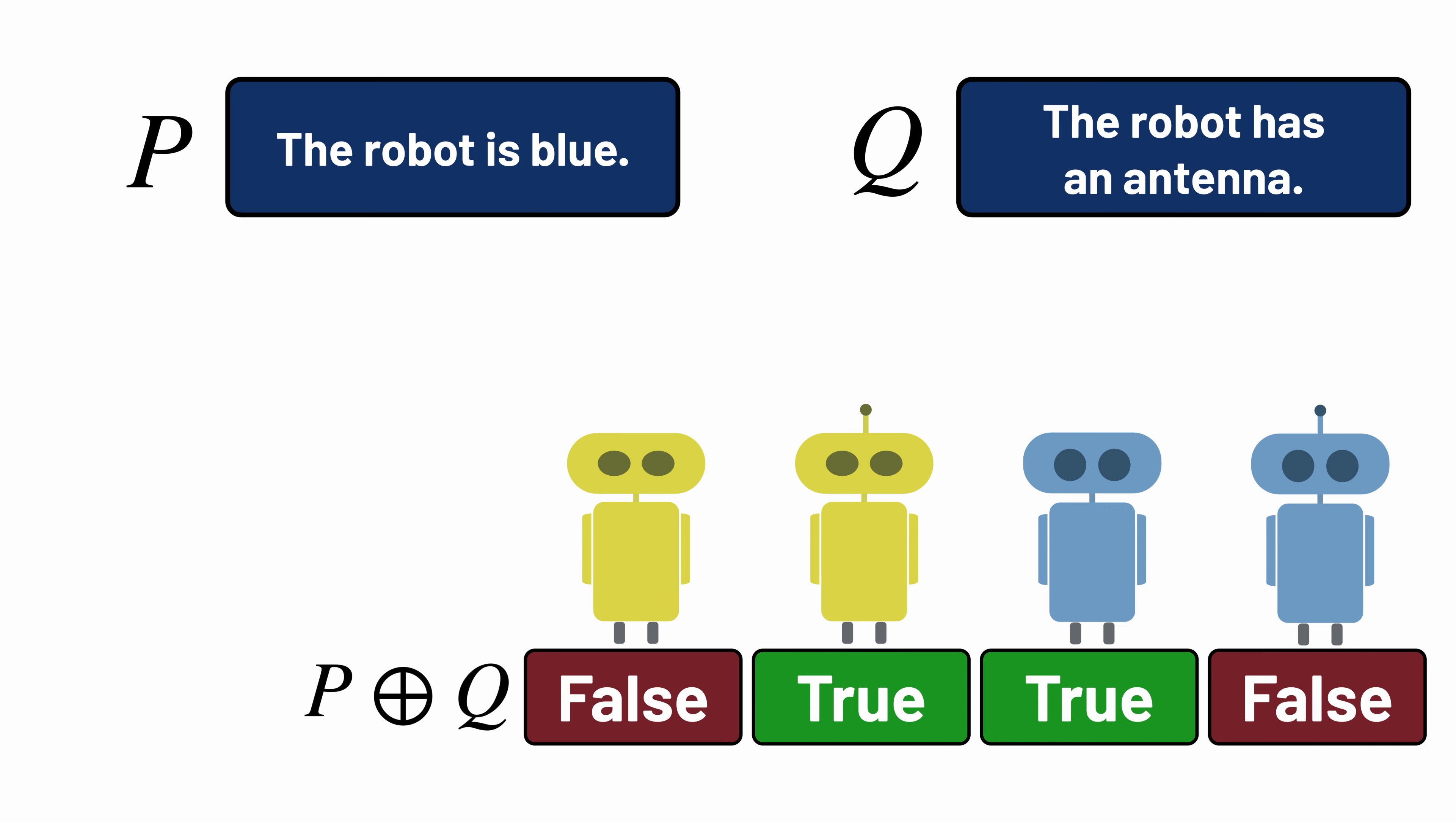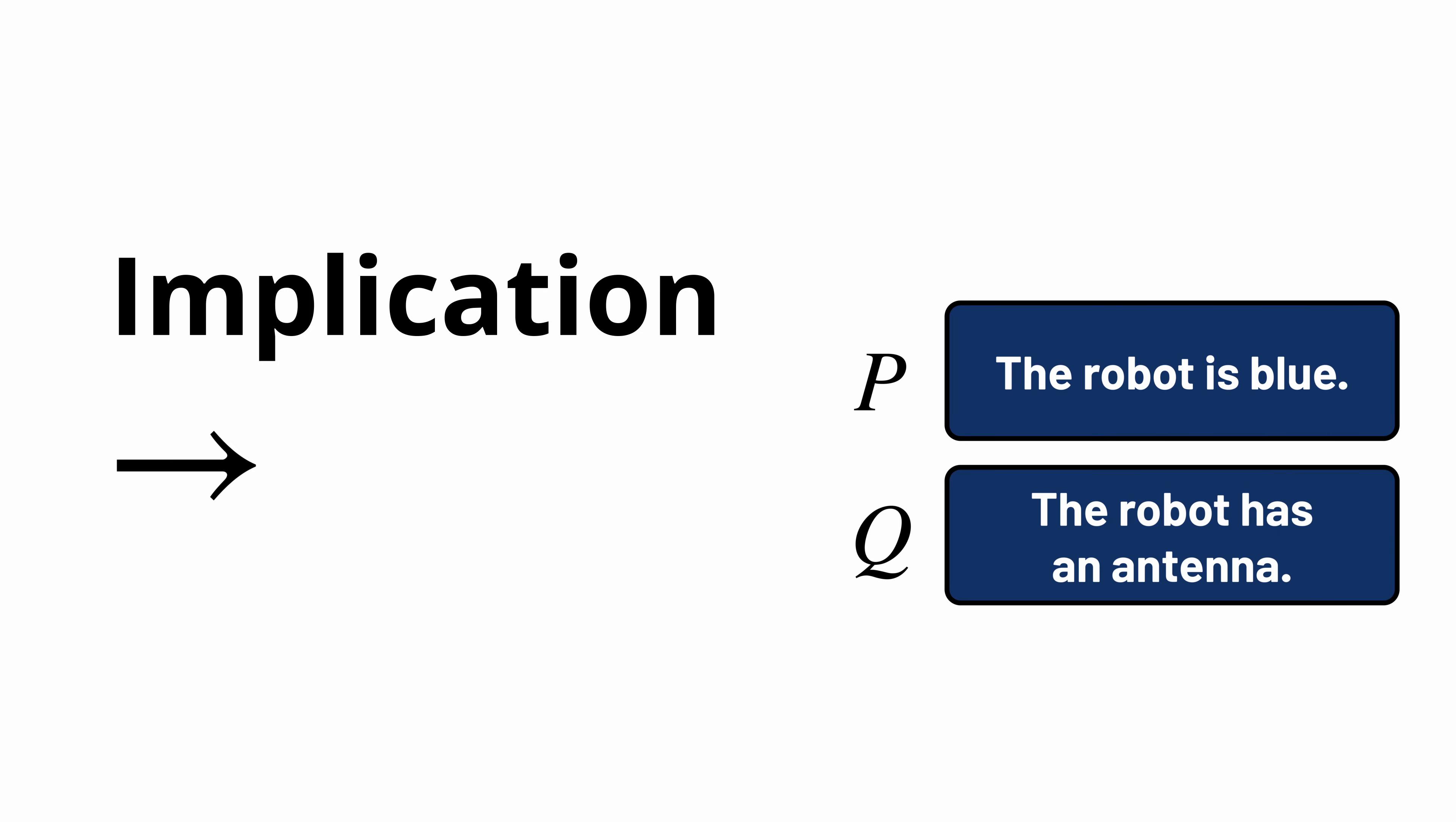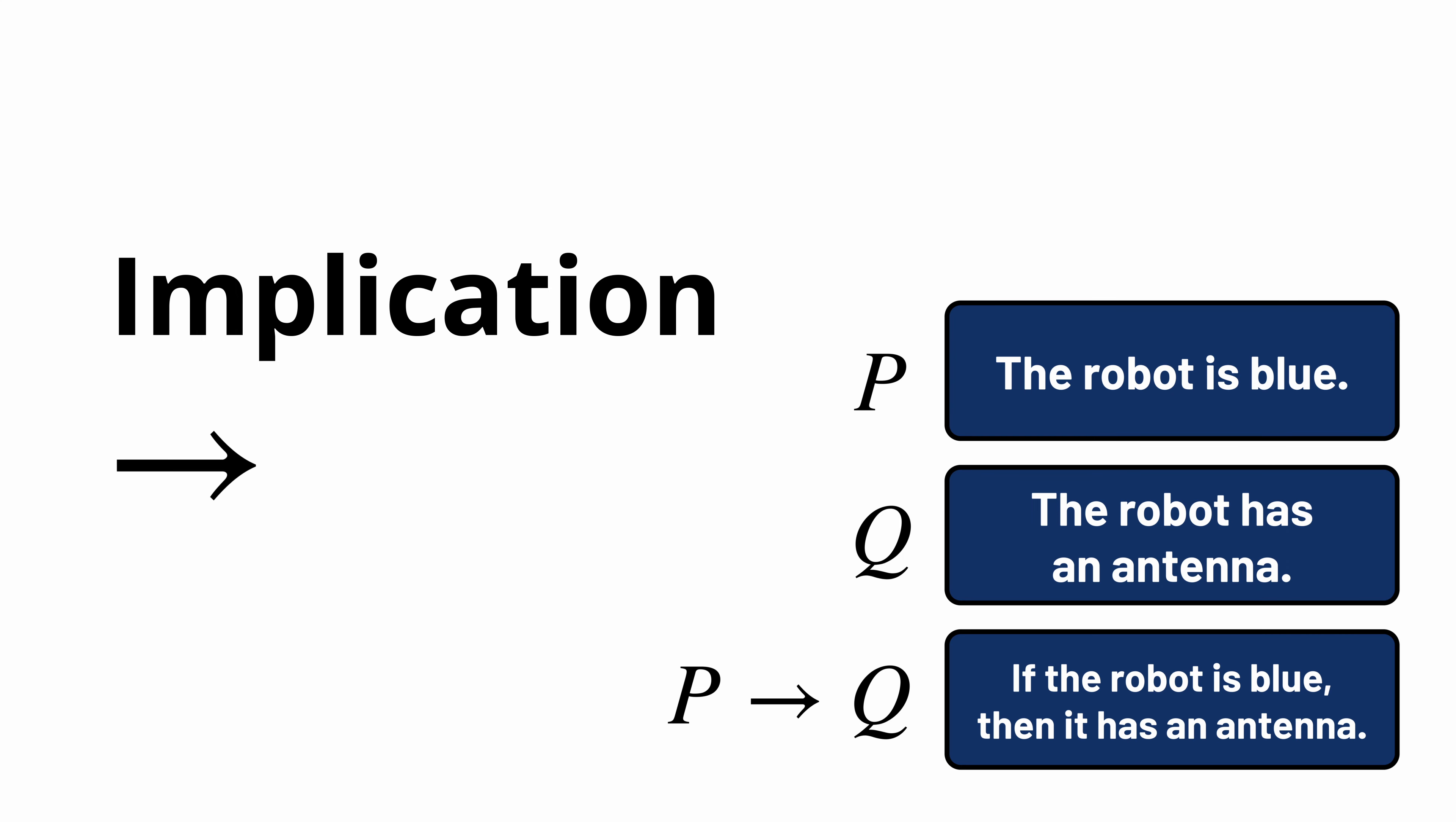In addition to NOT, AND, OR, and EXCLUSIVE OR, we also have this symbol, called LOGICAL IMPLICATION. If P means 'the robot is blue,' and Q means 'the robot has an antenna,' then this formula, which we read as P implies Q, or alternatively, if P then Q, tells us that if it's true that the robot is blue, then it also must be true that the robot has an antenna.